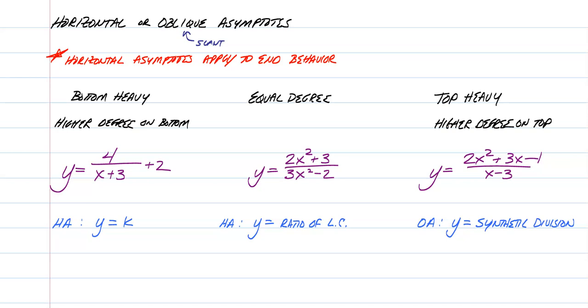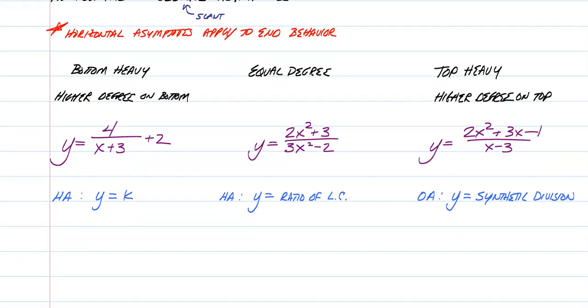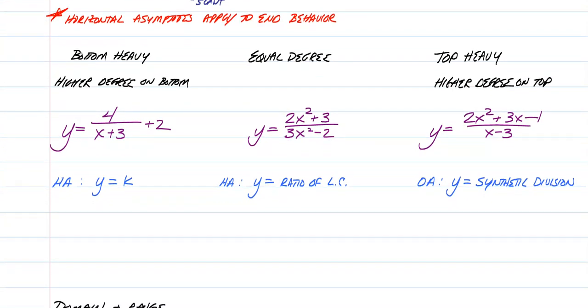You have three different types of equations. You have bottom heavy, which means there are more x's in the denominator than in the numerator. You have equal degree, which means you have the same number of x's or the same degree of x's in the numerator and denominator. And then you have top heavy, meaning there's more x's on top. That is going to determine what type of asymptote you're going to have. In the first example, this is bottom heavy. It's always y equals k, the number off to the side. You just say y equals 2. If there's no number off to the side, you just write y equals 0.